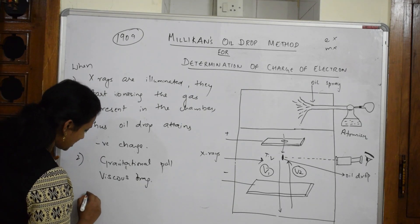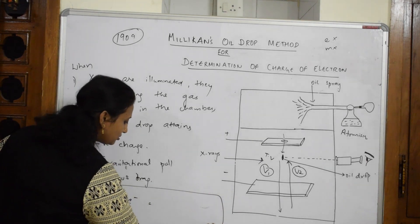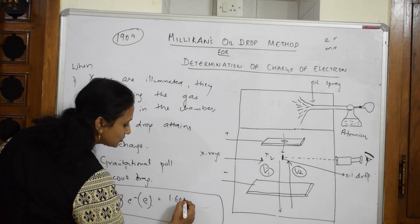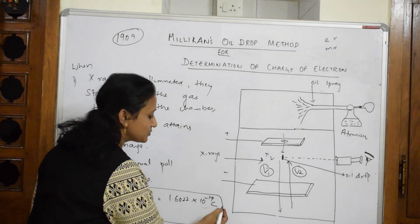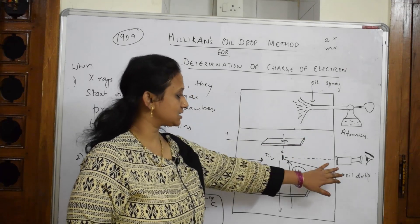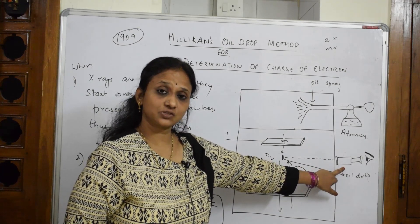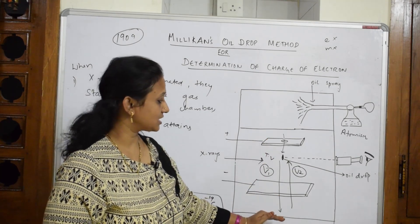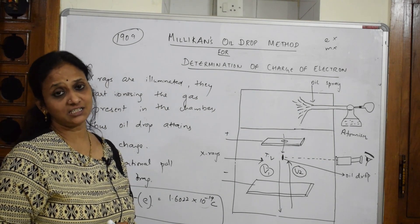According to that, when they calculated the value, the charge of electron was found to be — it is denoted by e — equal to 1.6022 × 10⁻¹⁹ coulombs. This is the result of the Millikan oil drop experiment. The components were: atomizer, two charged plates, telescope, X-rays, terminal velocity, gravitational pull, and viscous drag. With that, the charge of electron was calculated to be 1.6022 × 10⁻¹⁹ coulombs.